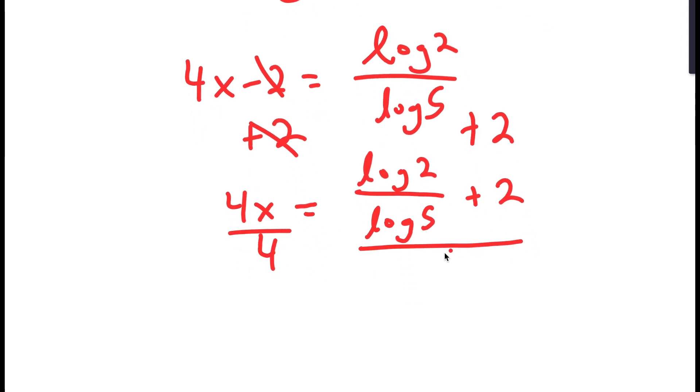And now, finally, I'm going to divide both sides by 4. But before I do that, I'm going to first find the values of log 2 and log 5. So log 2 is equal to 0.3010, and log 5 is equal to 0.6989.